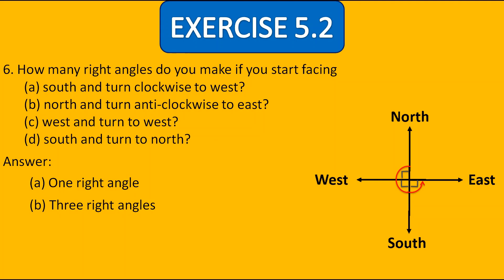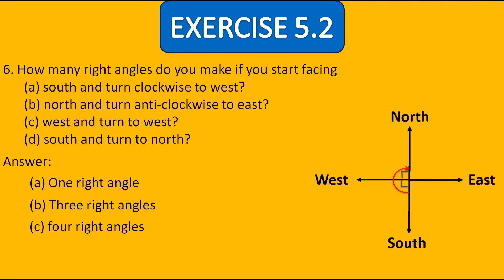In C, starting from west and turning to west — from west back to west — that is clearly four right angles. In D, from south to north — that is clearly two right angles.